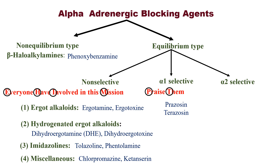Finally, alpha-2 selective. The '2' here indicates the second English alphabet from the last, which is Y. So remember: alpha-2 selective — think of the second letter from the end of the alphabet, that is Y — and write it as yohimbine.